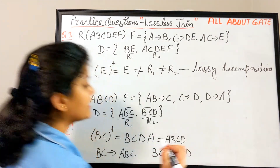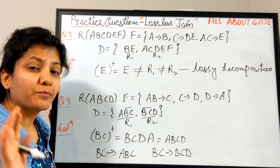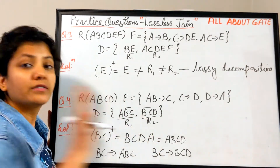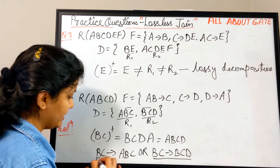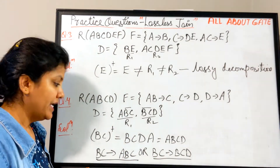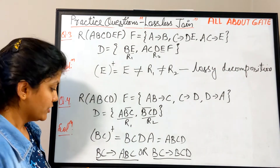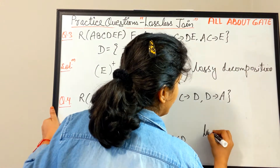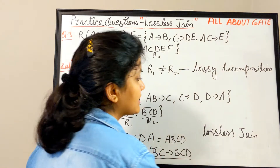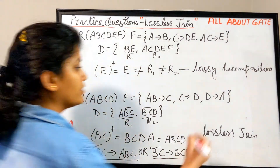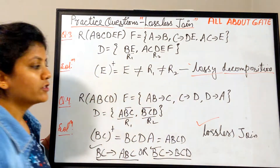Since BC+ = ABCD, we can say BC determines ABCD, which means BC is a super key of R1 and also of R2. Either one being true is sufficient — it is an OR condition. So the third condition holds, and this decomposition is a lossless join.